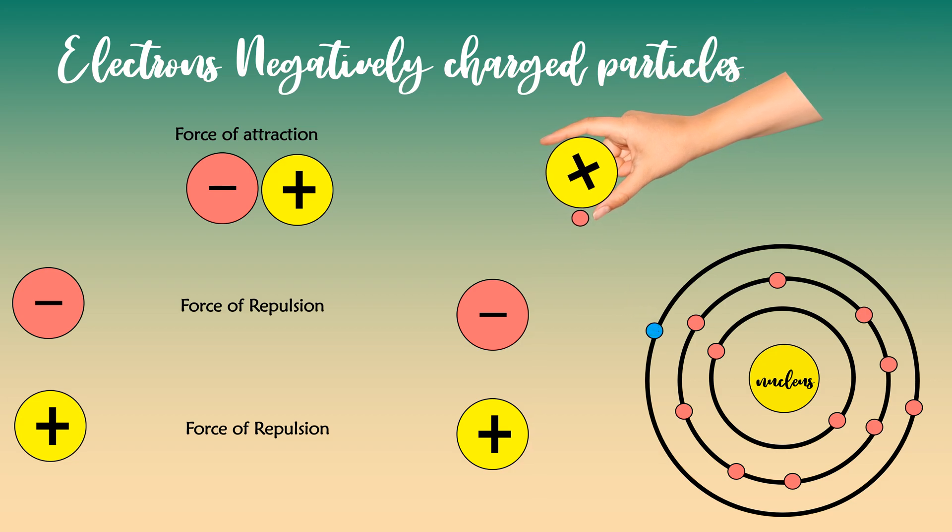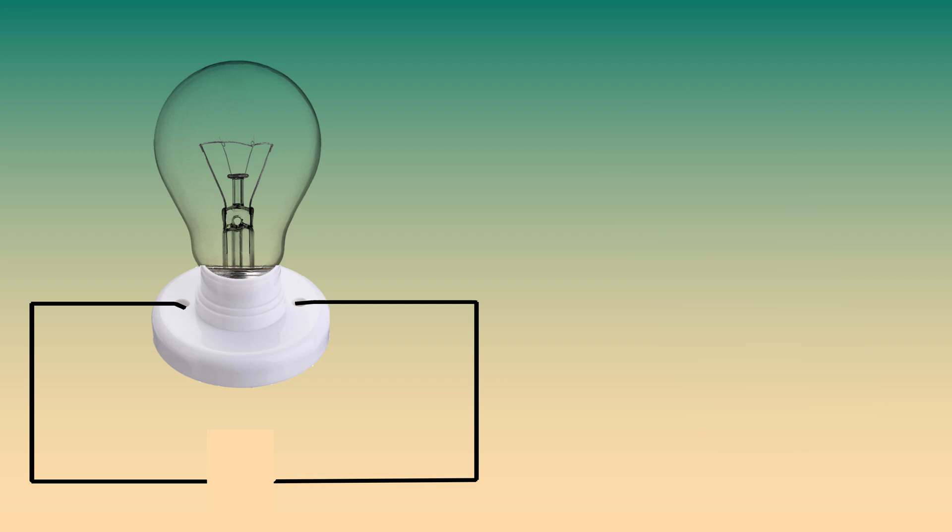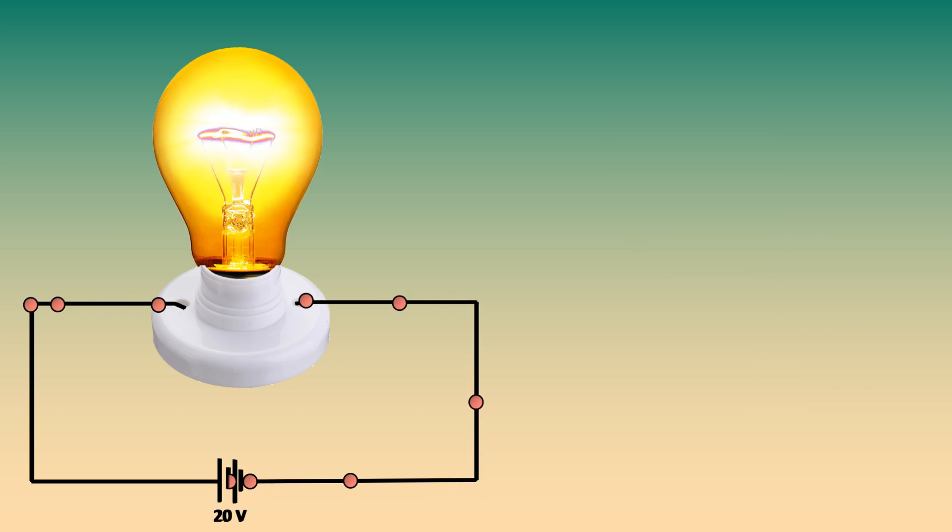That is, we can move the negatively charged electrons using a positive charge. We know that one of the sources of voltage is battery. It has a positive terminal and a negative terminal.